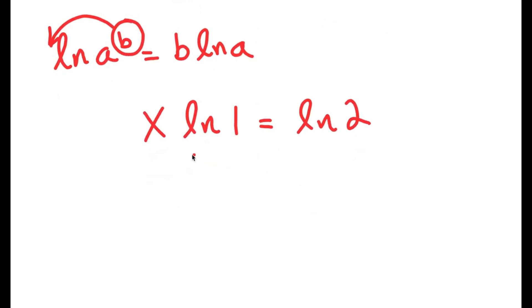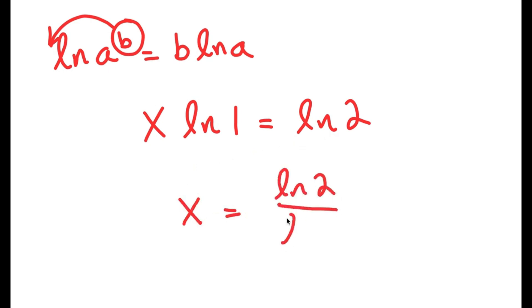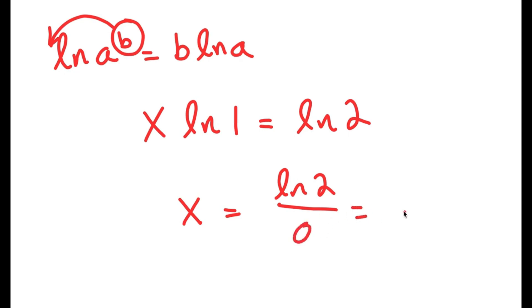You may be thinking we could just divide both sides by ln(1), and x would equal ln(2) over ln(1). However, the only problem with this is that ln(1) is equal to 0, and anything divided by 0 is undefined, so this would be undefined.